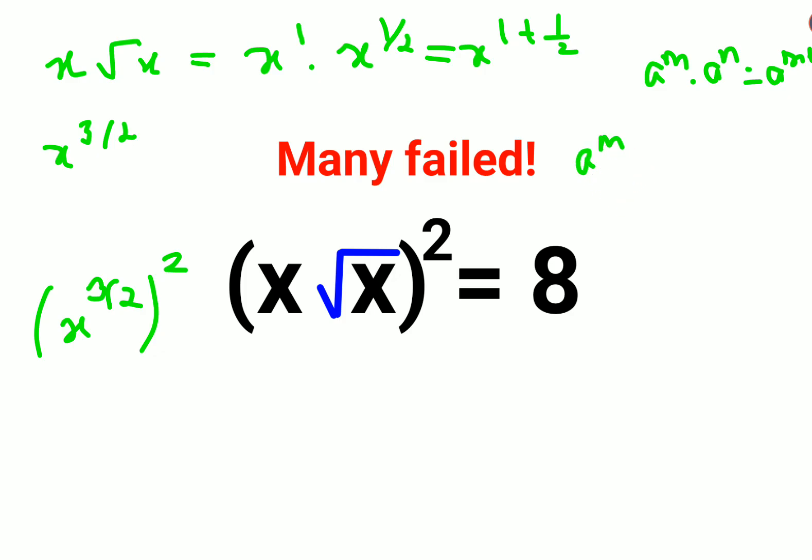Now remember a raised to m, the whole raised to n, can be written as a raised to m times n. So this will be x raised to 3/2 times 2.